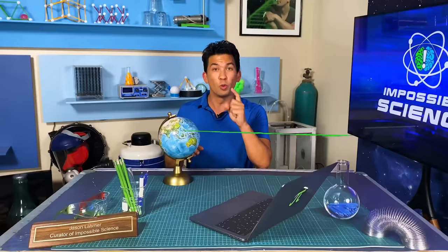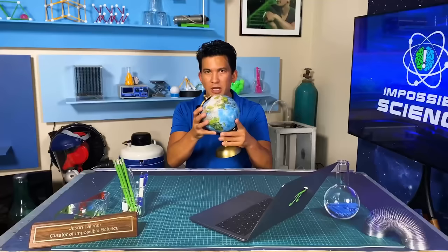Welcome to Impossible Science. I'm Jason Latimer, World Champion of Magic, and today I'm going to show you transformation with anamorphic art. Anamorphic art allows me to take a picture of a three-dimensional object and warp it to a two-dimensional shape that still looks 3D.